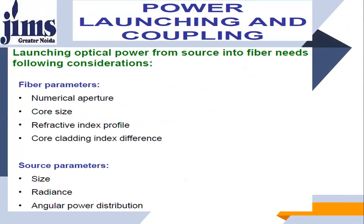Once you have an output of an optical transmitter, which is of course an optical signal or a light signal, the next step is to couple this particular light coming from the optical source into optical fiber. So there is a method to launch the light from the optical transmitter or optical source into an optical fiber. The launching of optical power from source into fiber needs the following considerations, in which you should be aware of the fiber parameters.